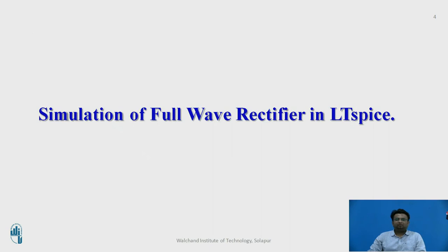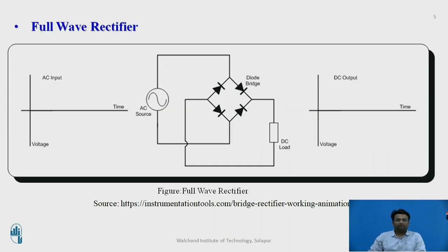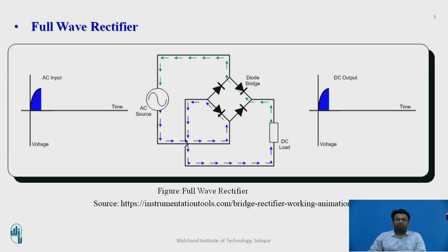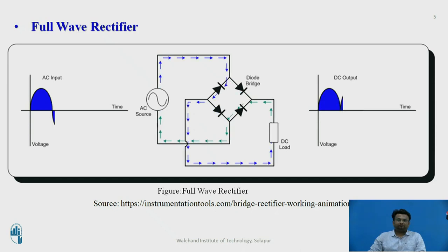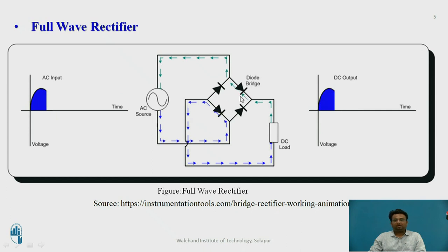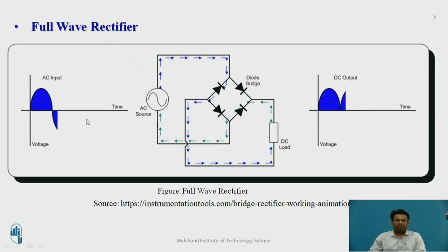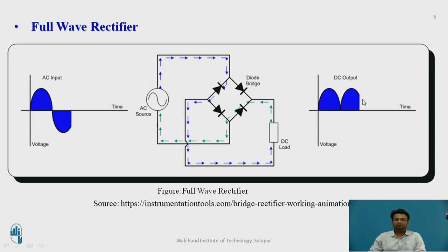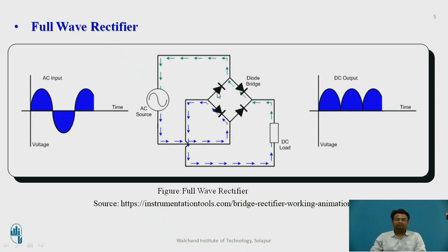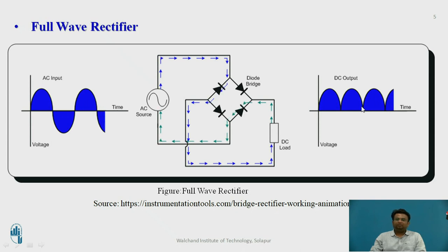Let us see the simulation of the full wave rectifier in LTSPICE software. The full wave rectifier consists of four diodes connected in a bridge configuration. During the positive half cycle, two diodes are conducting and the output is available. During the negative half cycle, the other two diodes are conducting and we get the output. In this way, for both positive and negative half cycles, two diodes are conducting, and we get the DC power supply output.